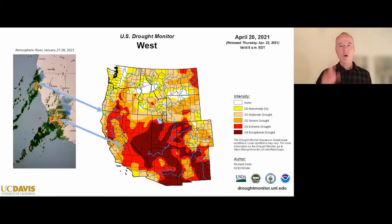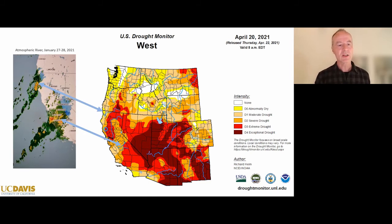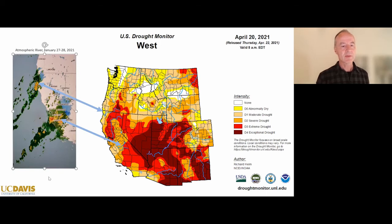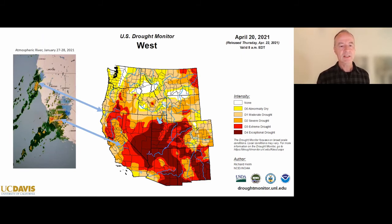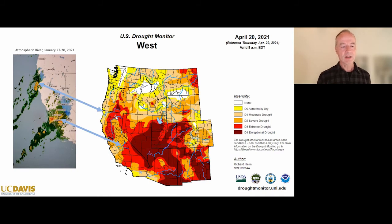Two arms of an atmospheric river hit the central part and the very northwestern part of California for about 48 hours with enormous amounts of rain coming in from the Pacific. That is reflected on the drought map, where those two areas have a slightly less severe drought impact than the other areas.